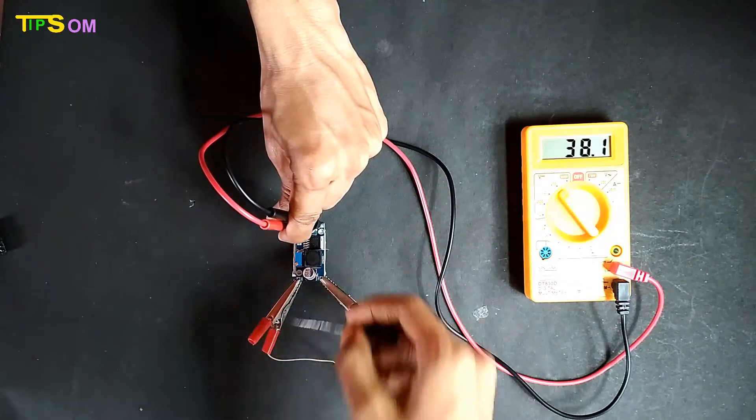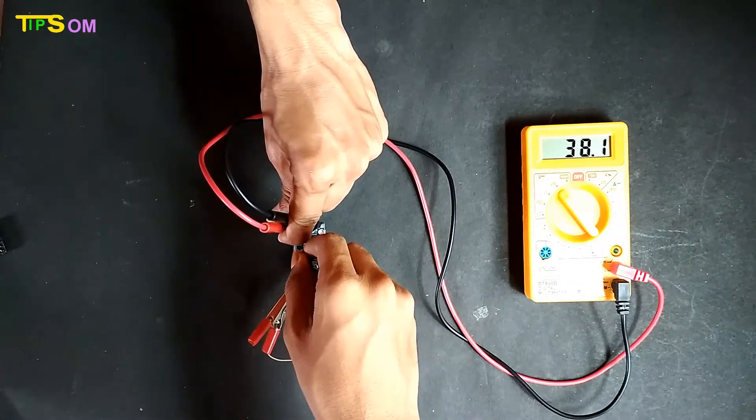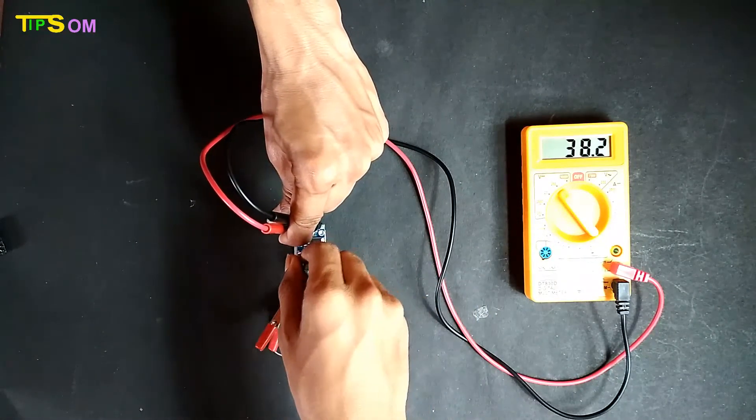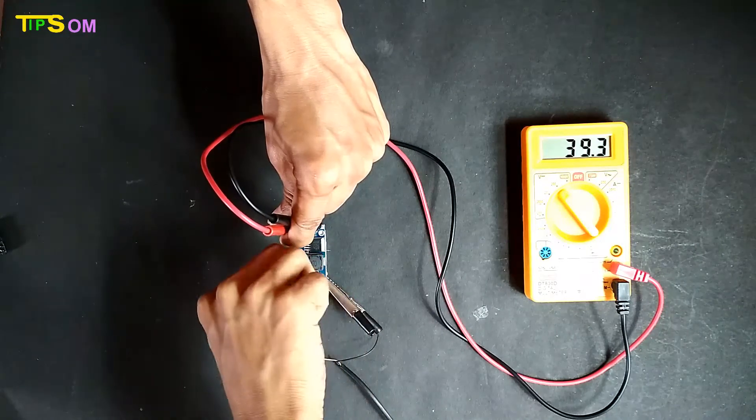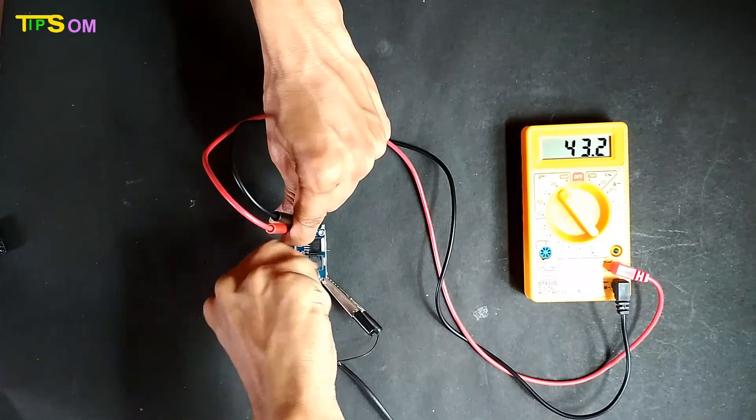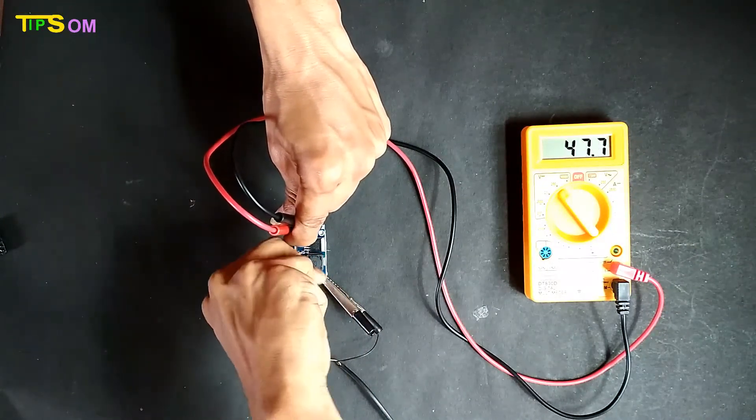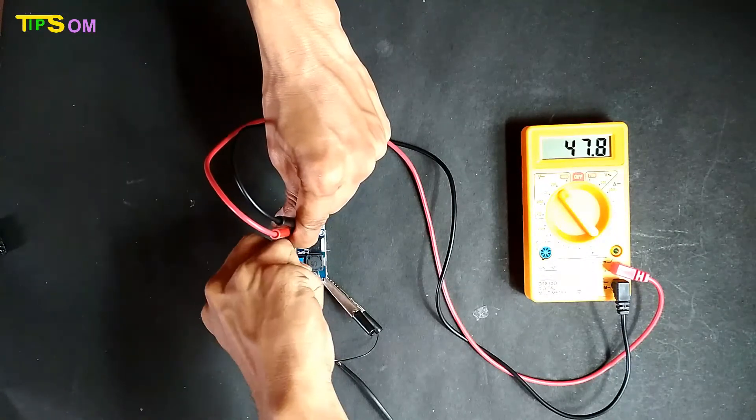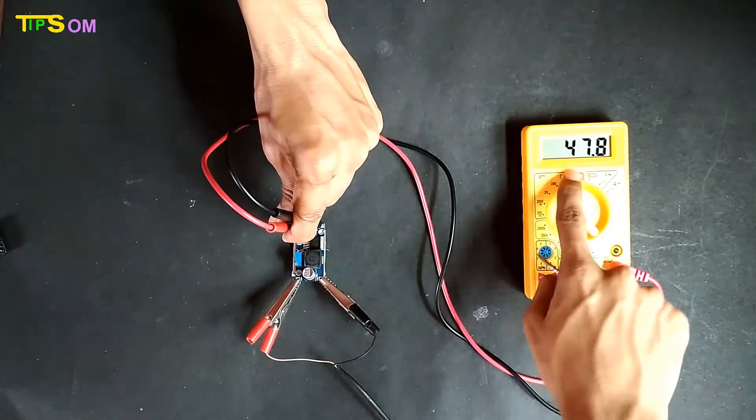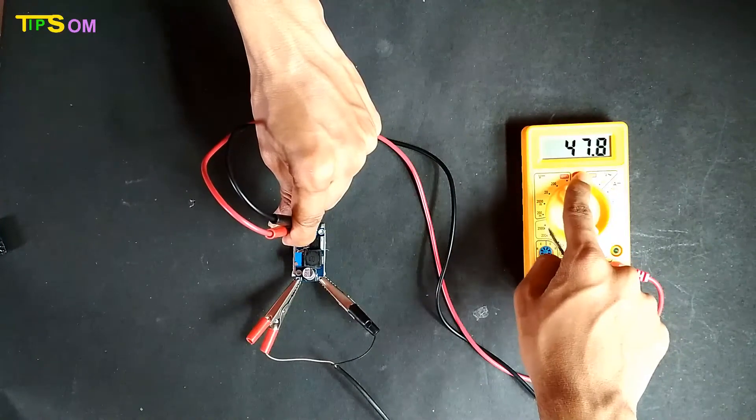Now I'm going to increase it and see how much it can be increased from 7 volts input. It is now increasing, and right now it's 47.8, so that is the maximum voltage on the output side.